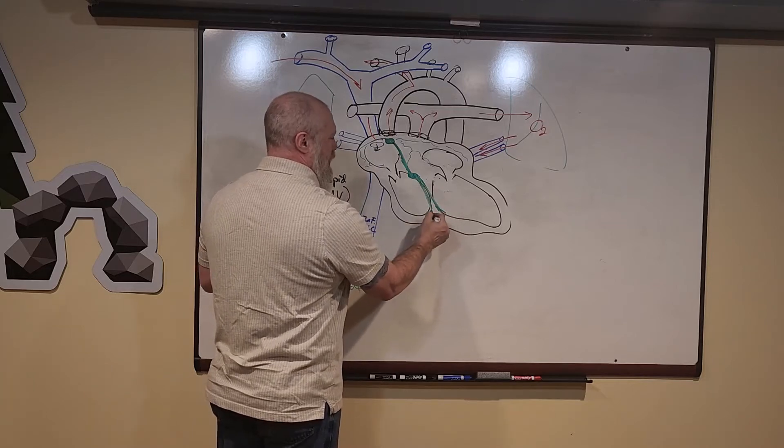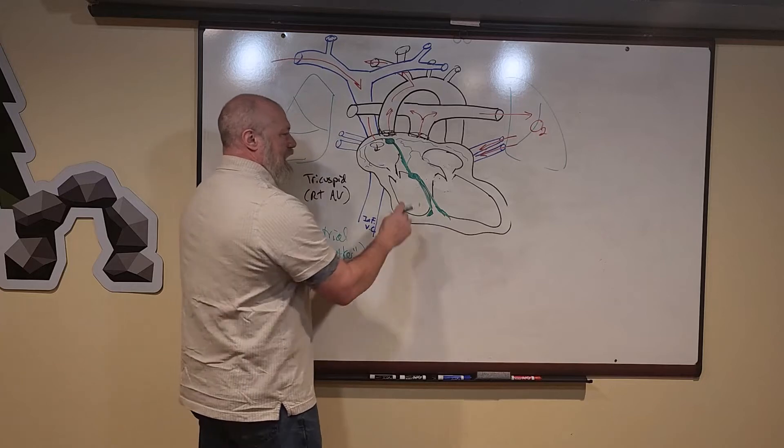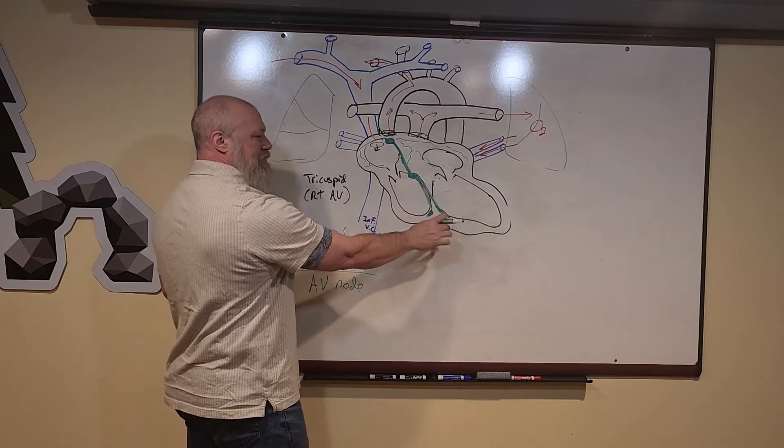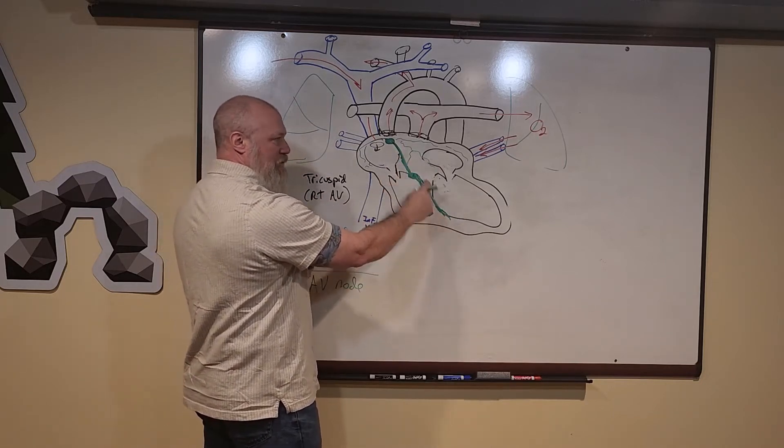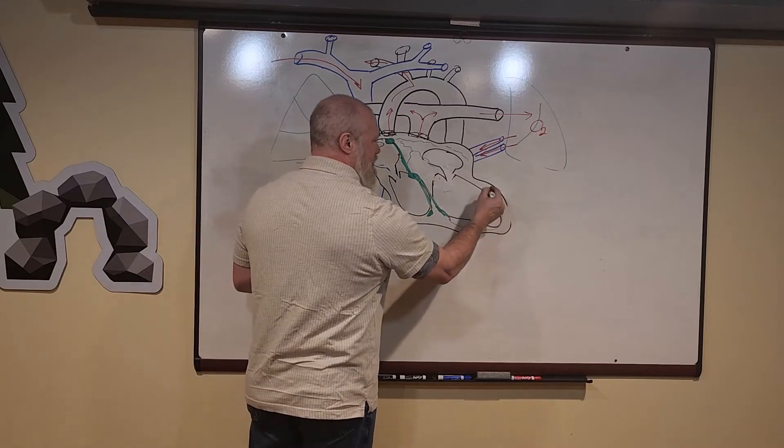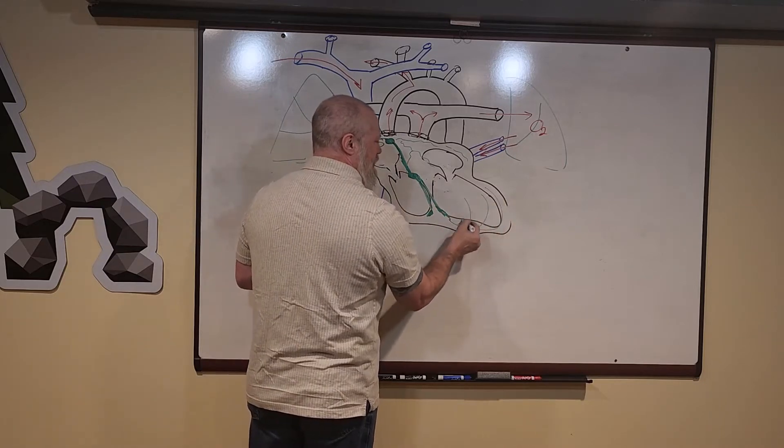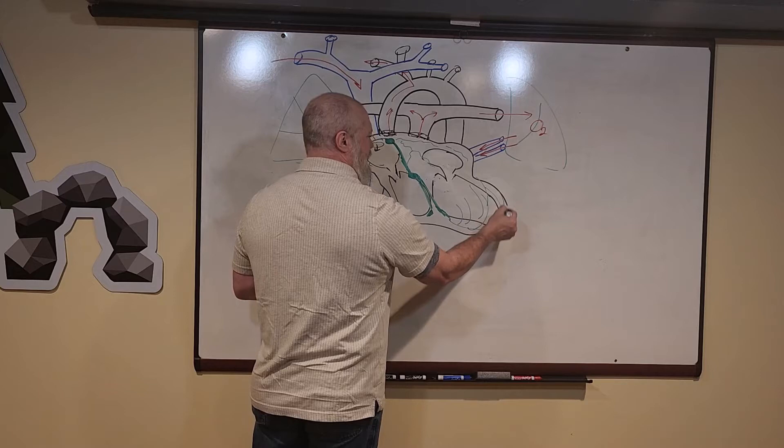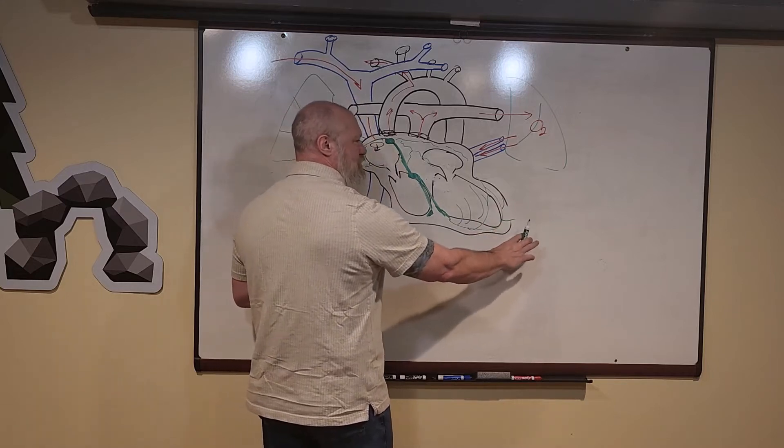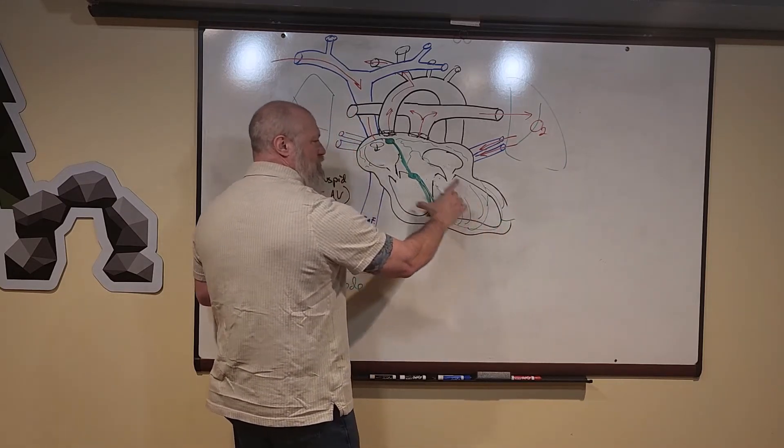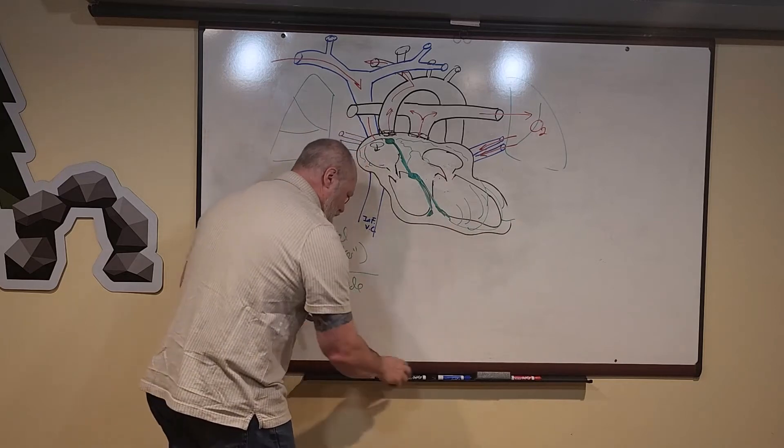They're going to be insulated. They're not going to depolarize the muscle tissue they pass through in the septum until they get down here to the apex of the heart. Then their fibers are going to come back up, so the depolarizing contraction wave is going to start at the apex of the heart and work its way back up.